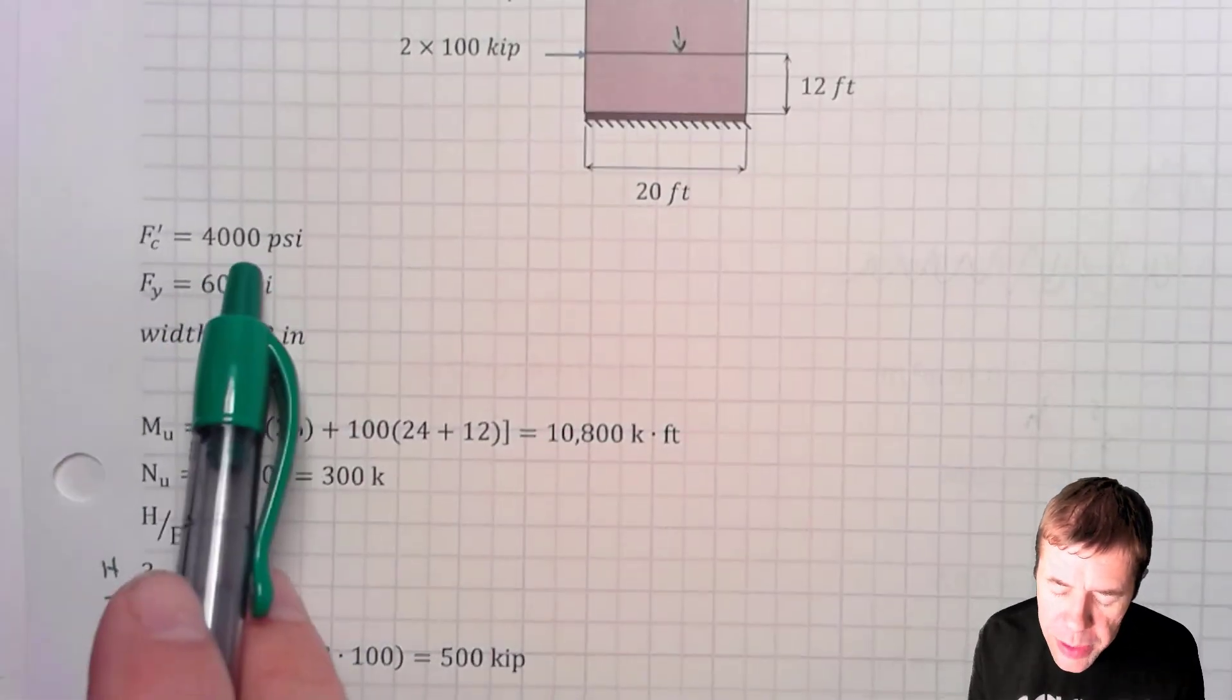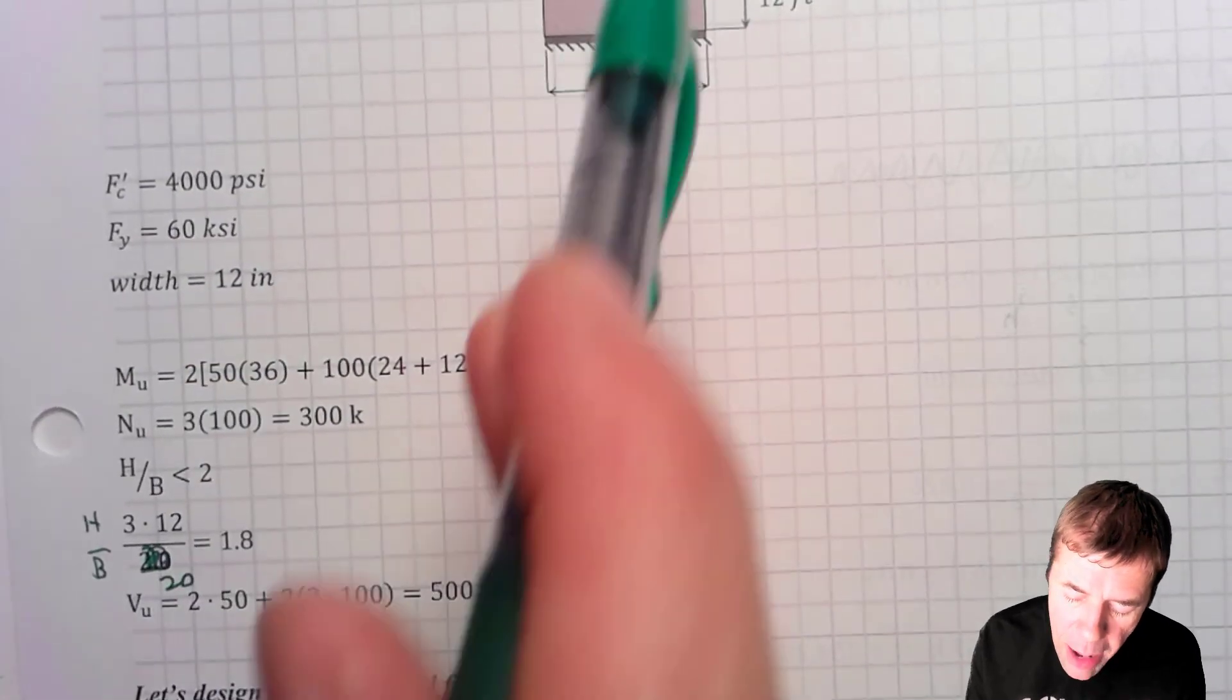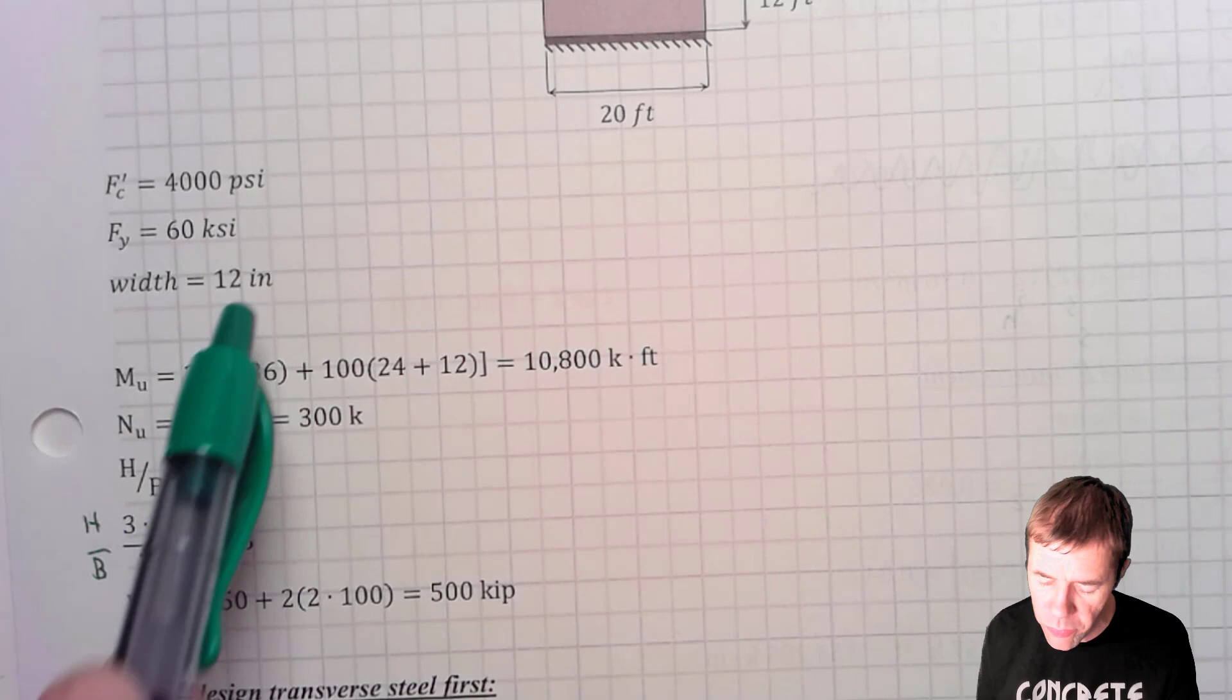The wall is 20 feet long. It's 12 feet for each story, so it's 36 feet tall. The f'c is 4000 psi, fy is 60 ksi, and the width of the wall, the depth into the page, is 12 inches.